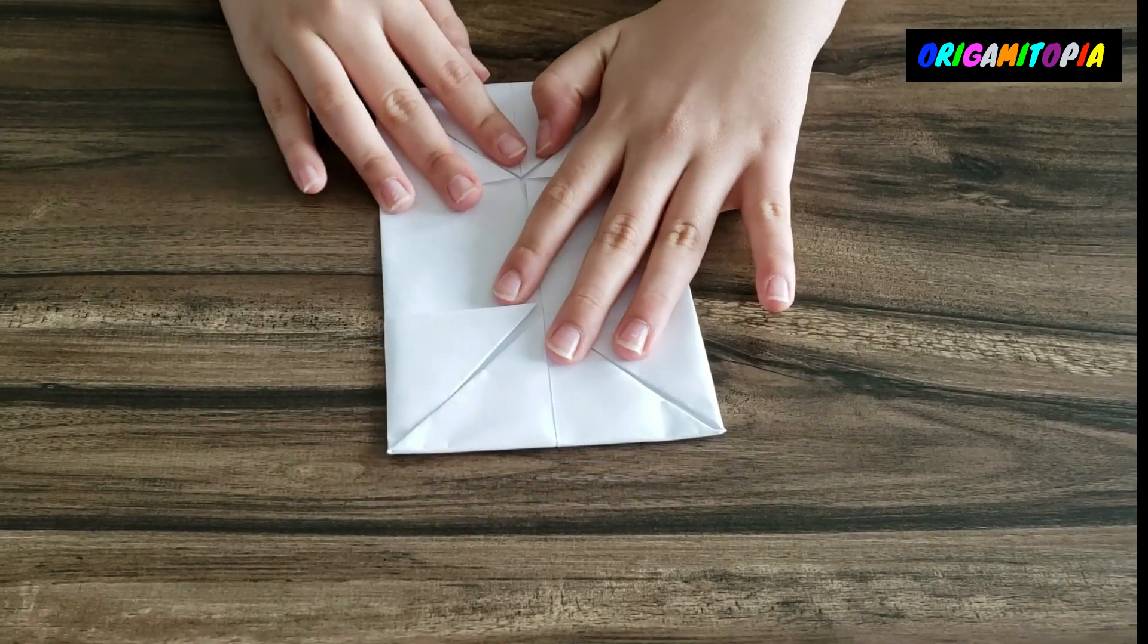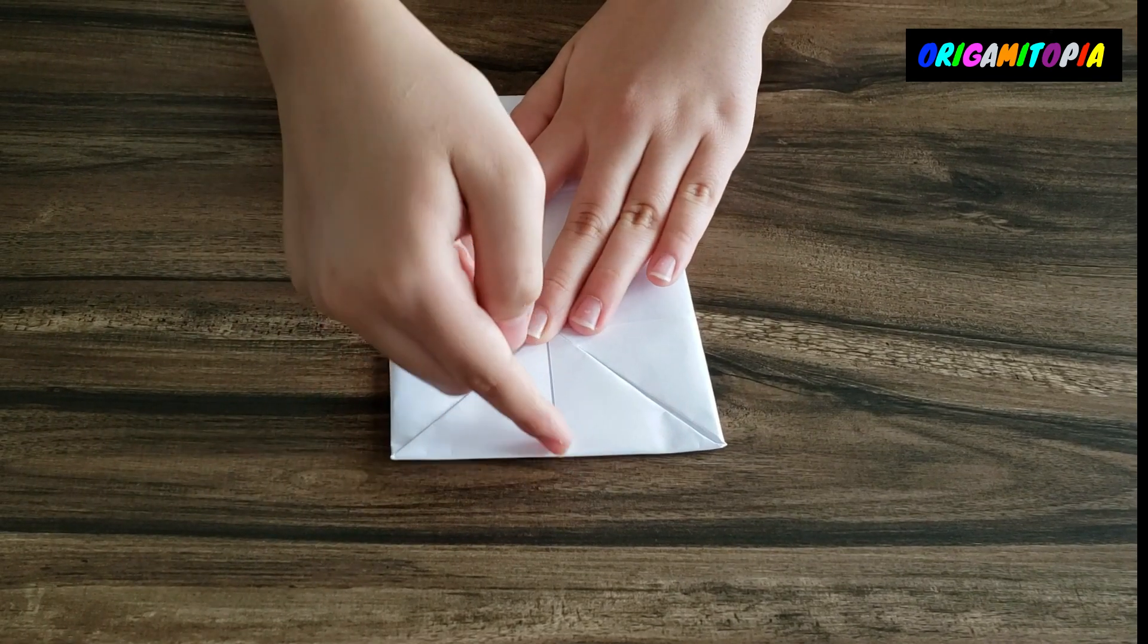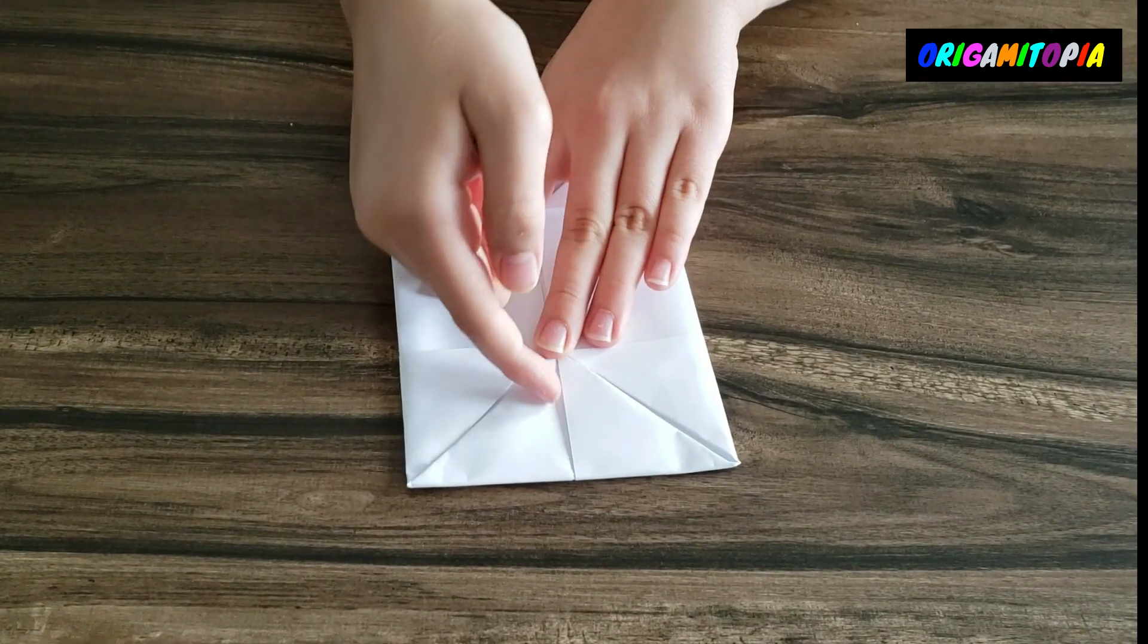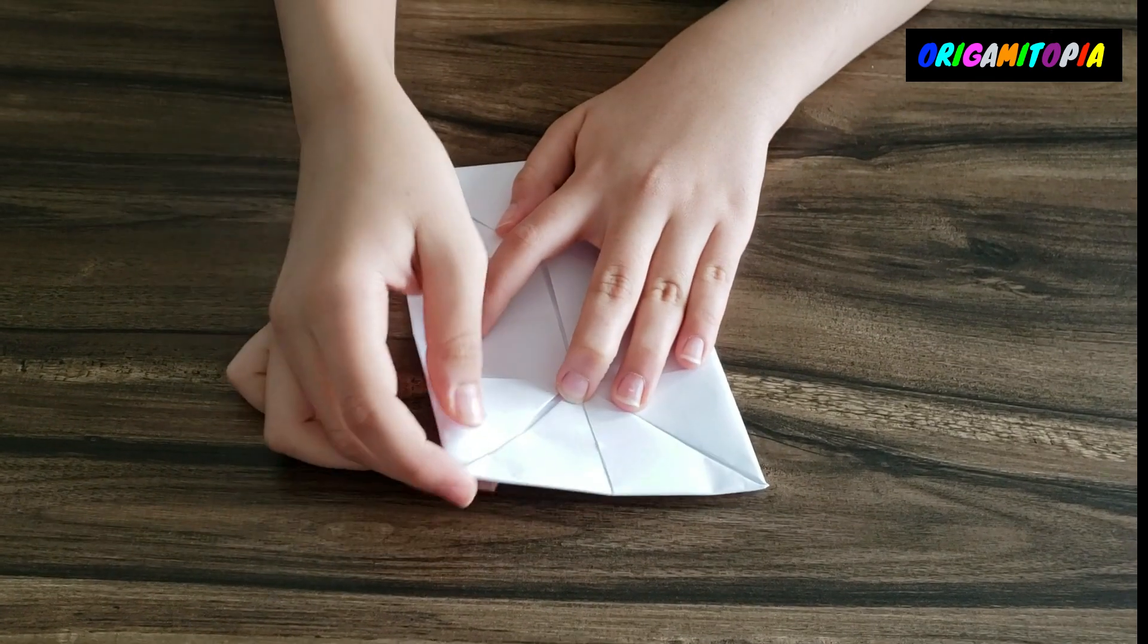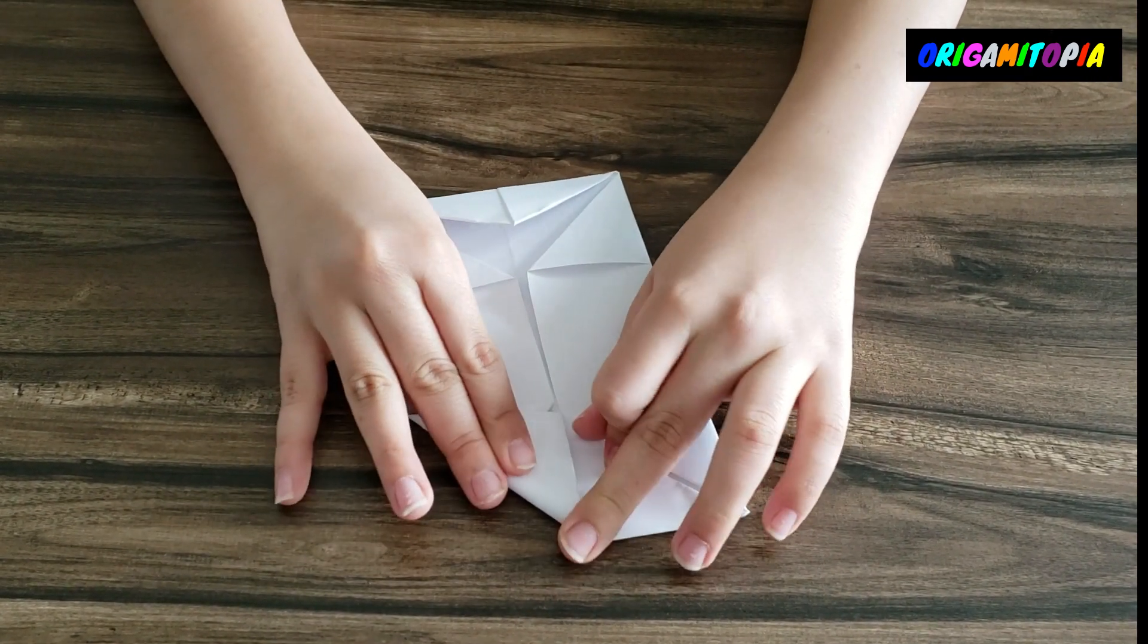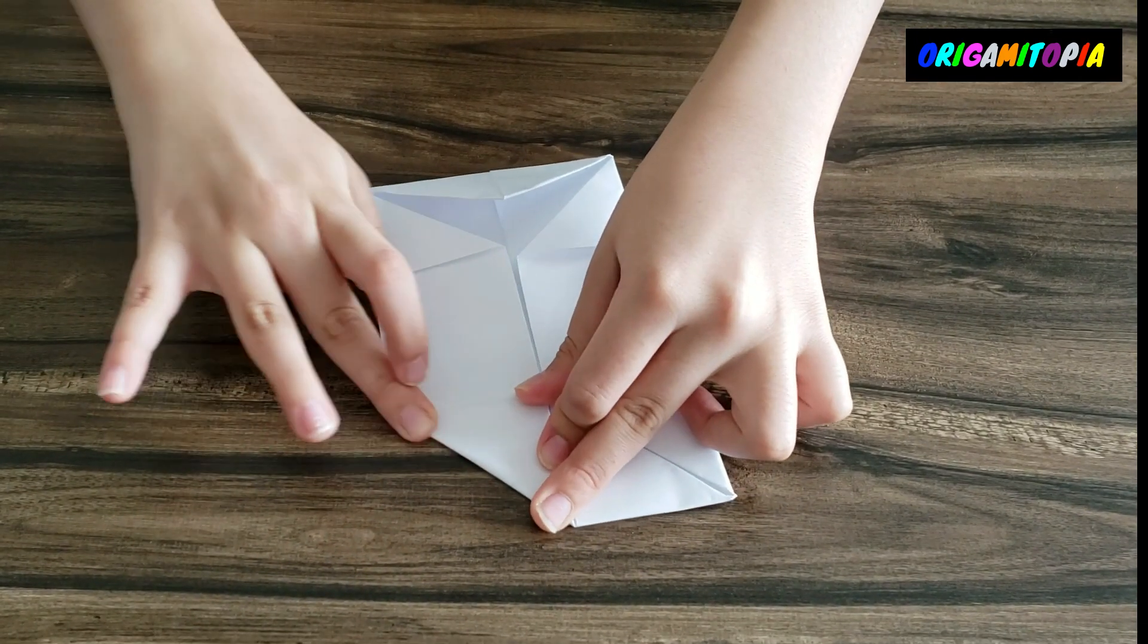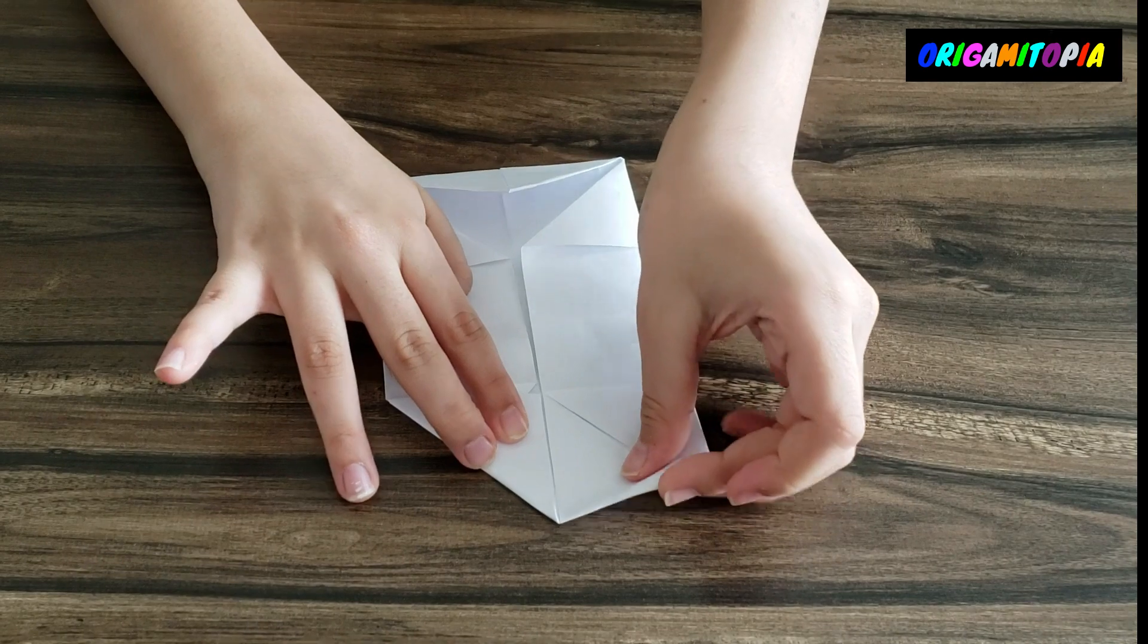And now what you want to do is take this corner and fold it right onto this line right here. You'll also notice you have these two pockets. So take this, fold it right on that line. Do the same thing with this side.